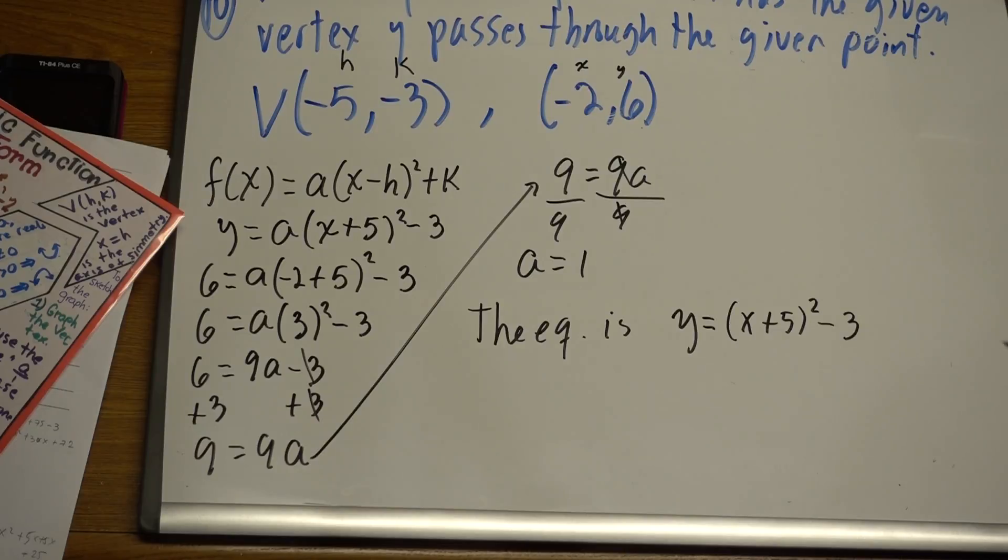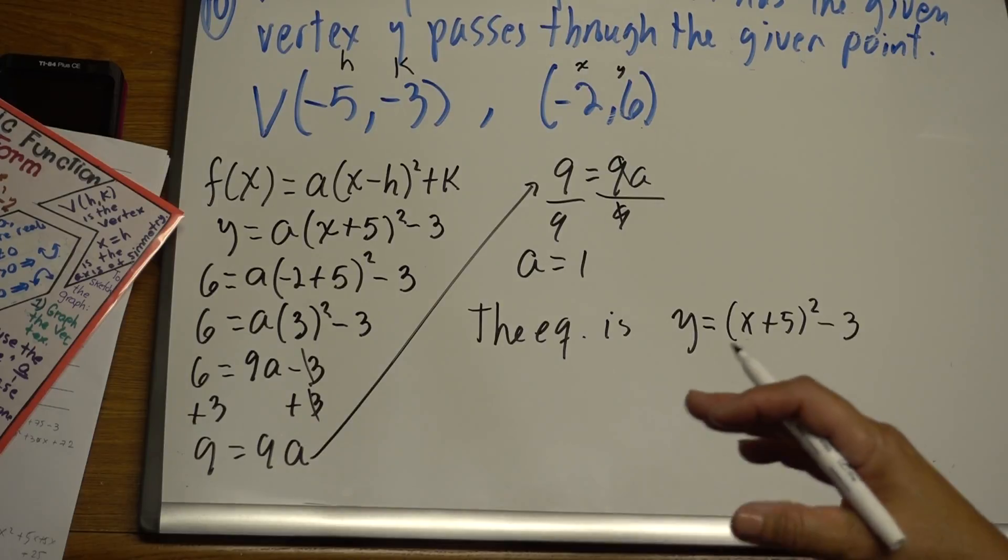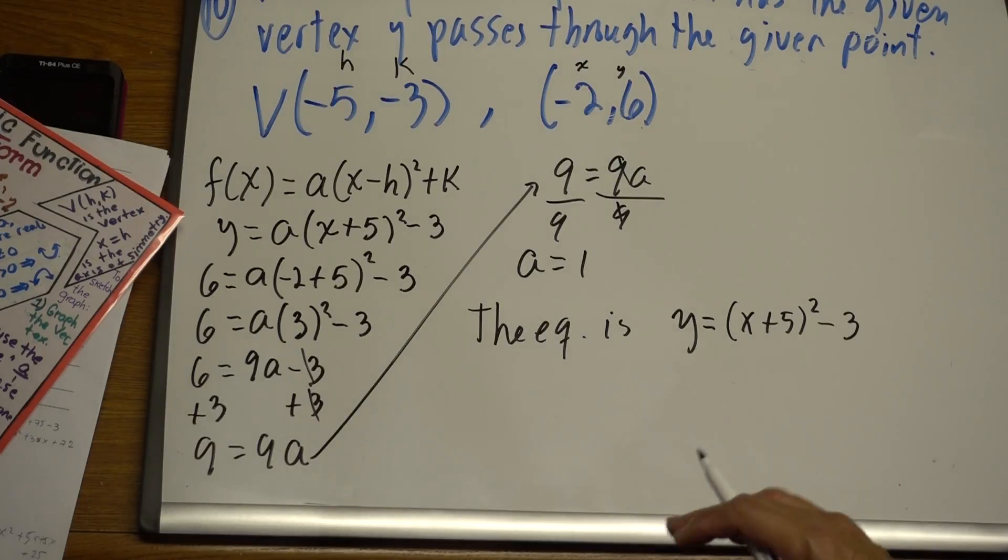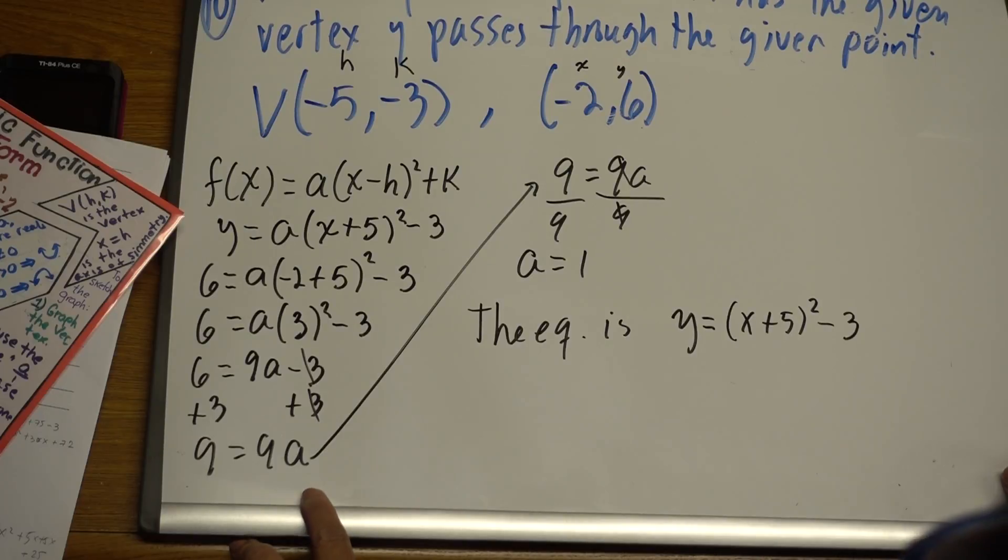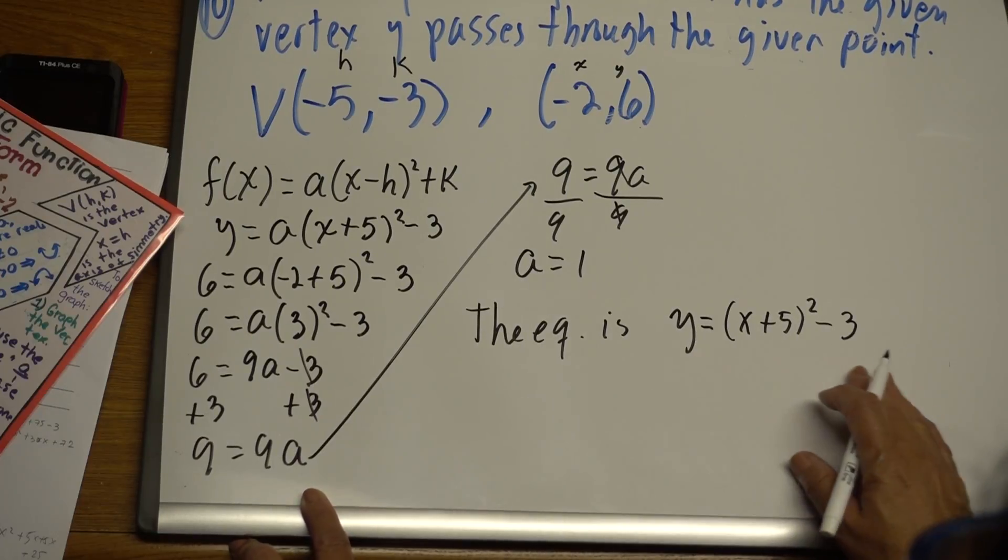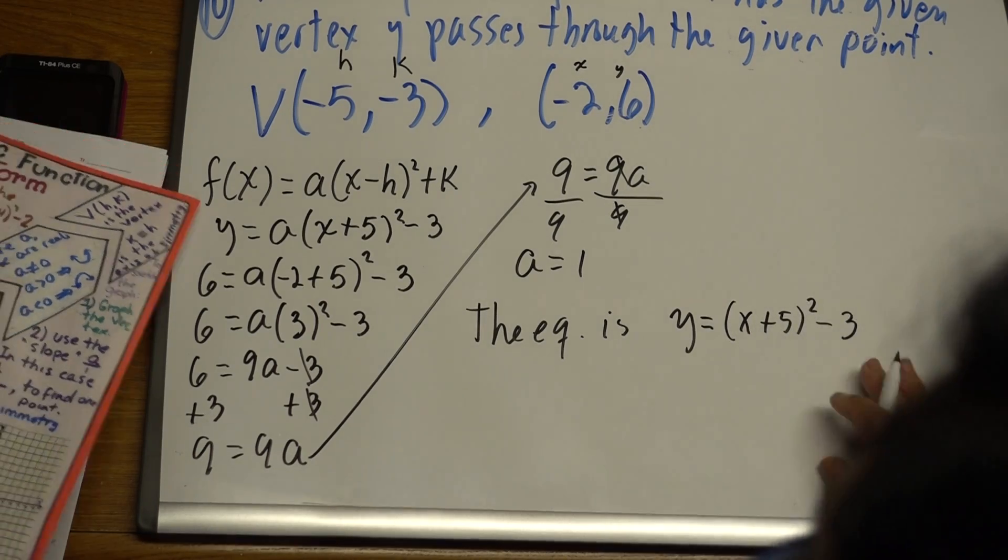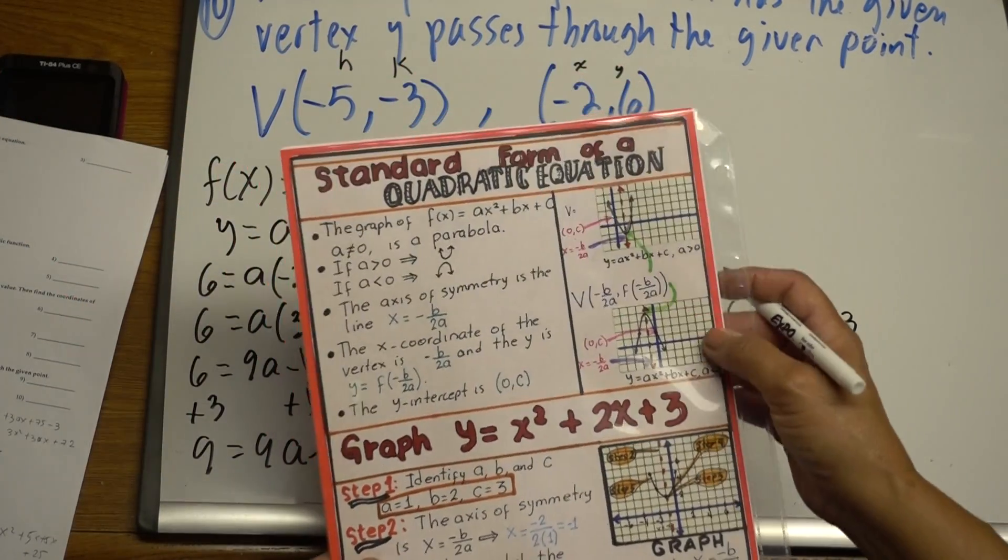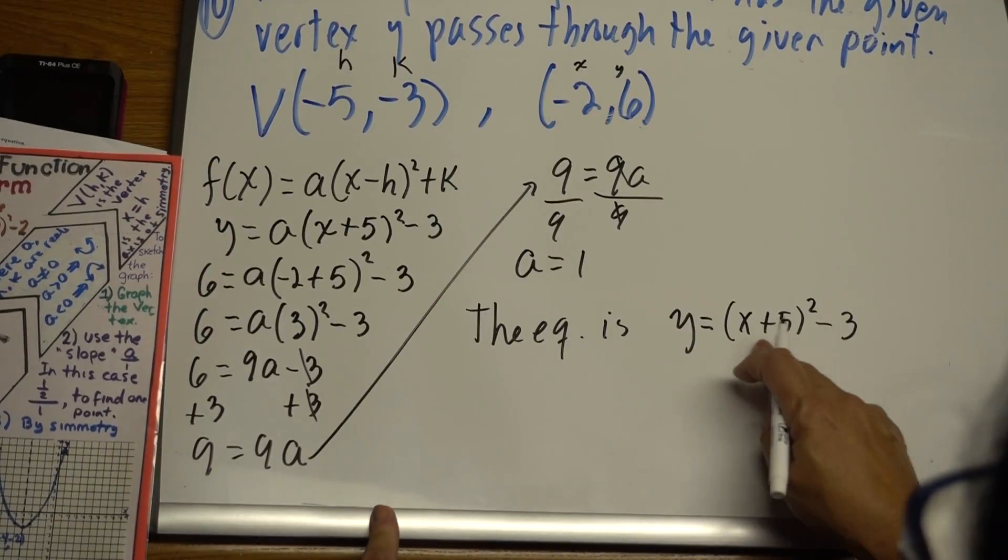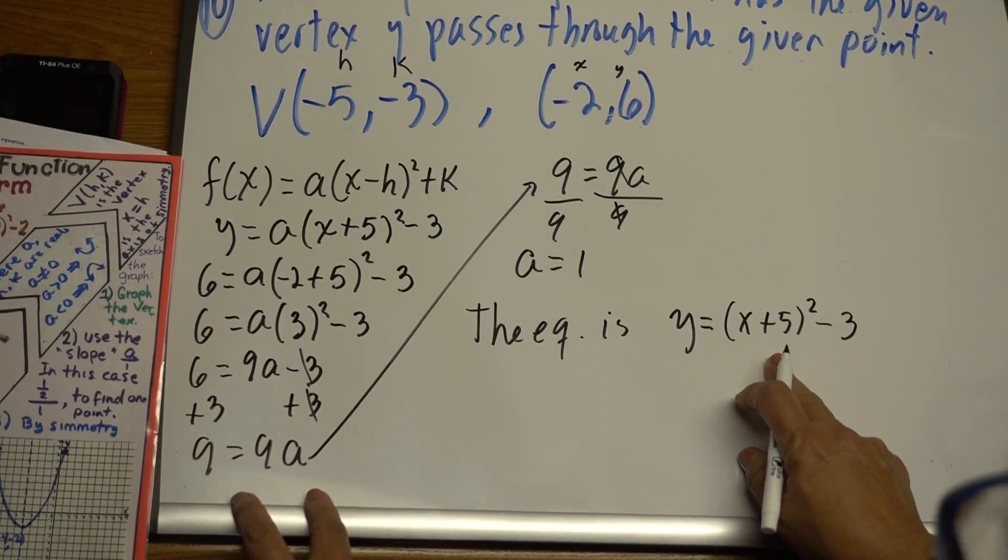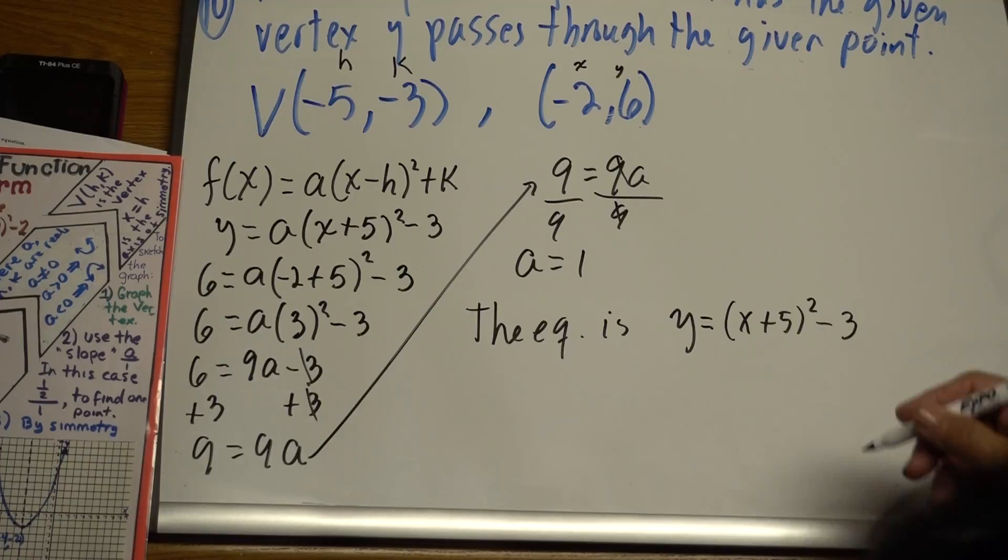And if you notice in the back part, because as you know all the answers are in the back of the review, the answer is not in vertex form. The answer is given in standard form. So it's very simple. The only thing we have to do is develop this binomial square.